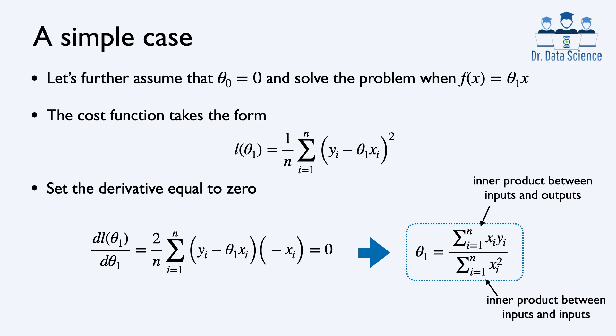To find the derivative, we use the chain rule. Let z_i equal y_i minus theta_1 x_i. Then the derivative of z_i squared is 2 times z_i, and the derivative of z_i with respect to theta_1 is negative x_i. Setting this derivative equal to 0, and noting that theta_1 has no dependence on the index i, we can simplify and solve, which gives us theta_1 equals the summation of x_i y_i divided by the summation of x_i squared.